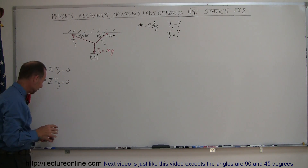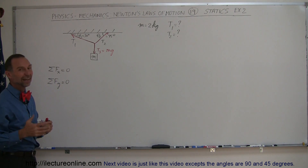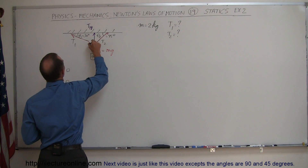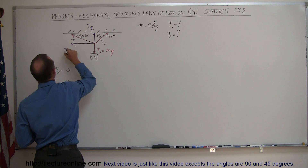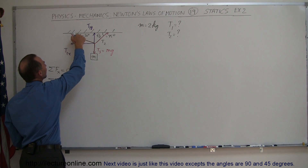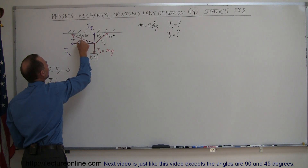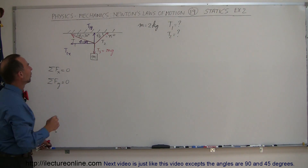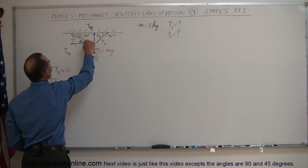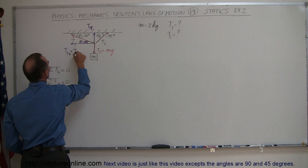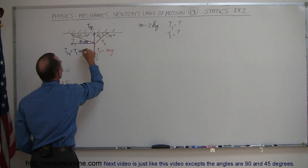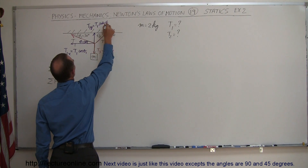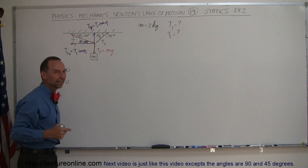We're going to subdivide tension 1 and tension 2 into their x and y components. Tension 1 in the y direction and tension 1 in the x direction. Notice that if this angle is theta equal to 30 degrees, then this angle must also be 30 degrees because alternate interior angles are equal. This makes the opposite side T1 times the sine of theta 1, and the adjacent side T1 times the cosine of theta 1.